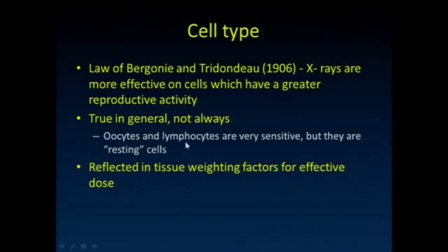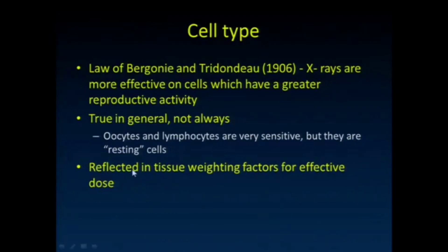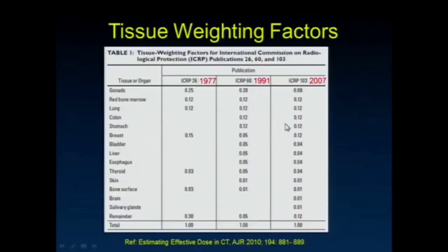For instance, lymphocytes and oocytes are very radiation sensitive, but these are resting cells. So there's certainly more to the story than just how often the cells are replicating. And as I mentioned, if you look at those weighting factors on the tables for effective dose, they roughly follow this rule. Why are skin, brain, and muscle cells relatively radiation insensitive? Because they really don't have that same reproductive activity.